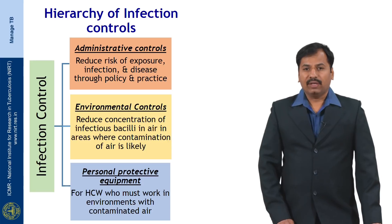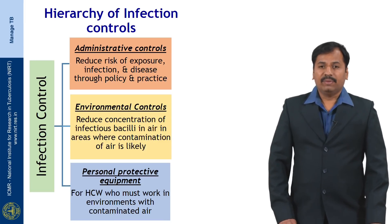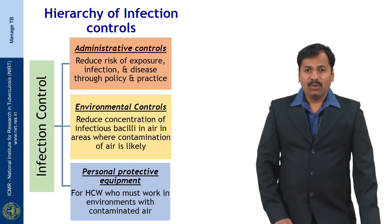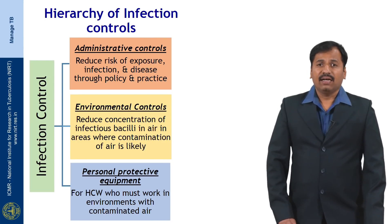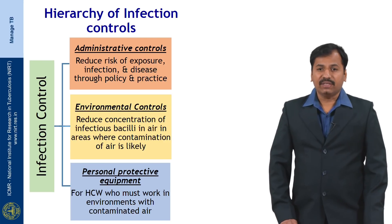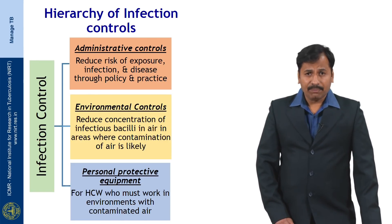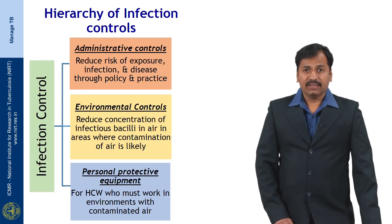The hierarchy of infection control has three levels. First is administrative control, second is environmental control, and third is personal protective equipment. Administrative control aims to reduce the risk of exposure among patients and healthcare workers through proper policy and practice. Environmental controls help reduce the concentration of infectious bacilli in the air in areas where air contamination is likely. Personal protective equipment is used to protect healthcare workers who work in such contaminated areas.